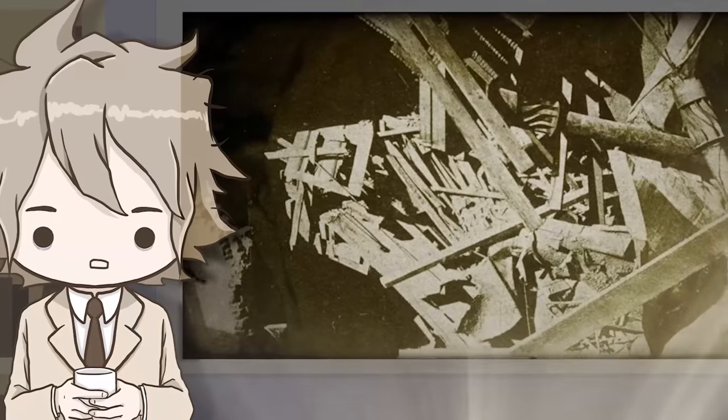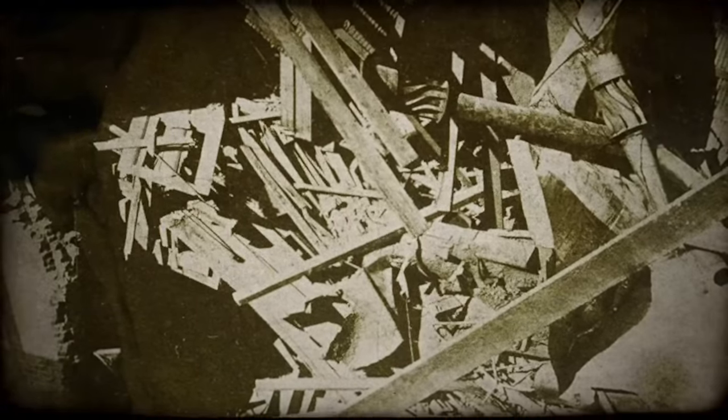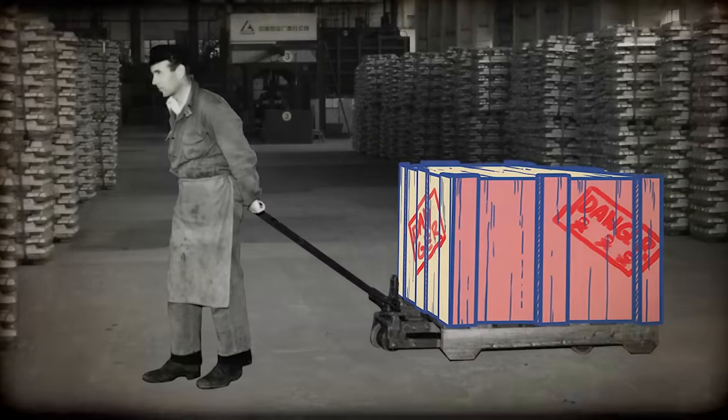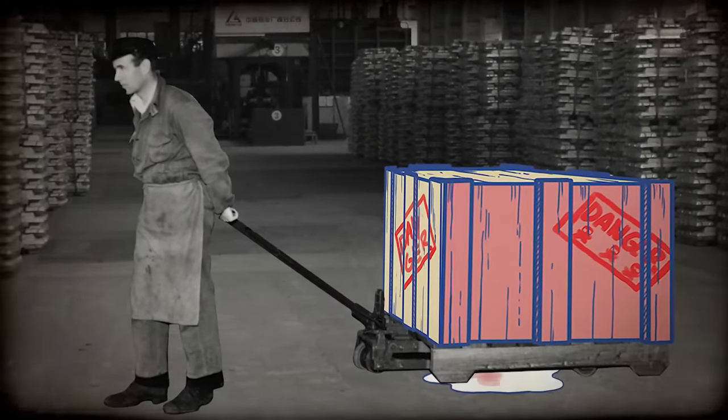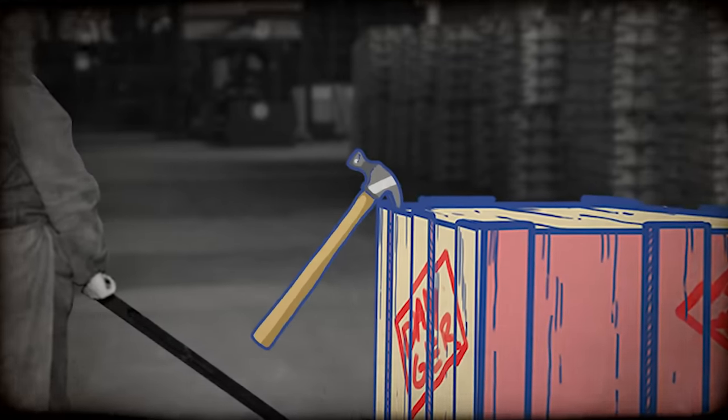An early explosion of nitroglycerin in San Francisco leveled an entire building and killed 15 people. A 300-pound crate of the substance was shipped into the city, leaking nitroglycerin. When a worker brought a hammer to open the crate, it exploded, leveling the building.